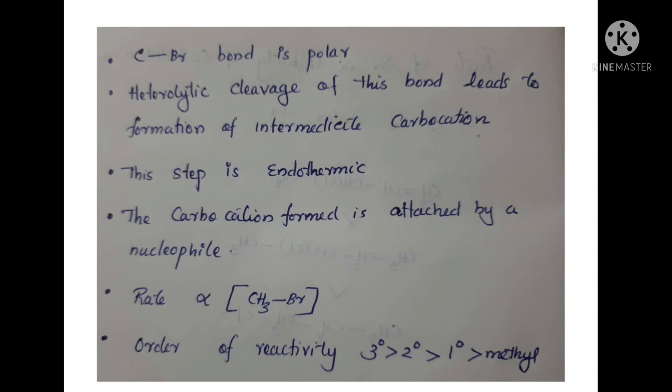The carbon-bromine bond is polar. Heterolytic cleavage of this bond leads to formation of an intermediate carbocation. This step is endothermic, and the carbocation formed is attacked by a nucleophile.